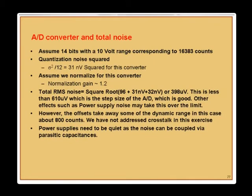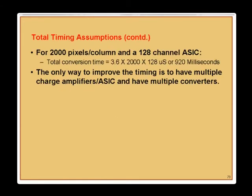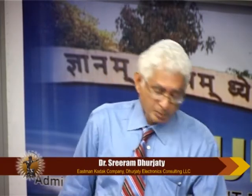This is the ideal case; in practice it differs. About 800 counts of the 14-bit converter are consumed by offsets, and crosstalk is not addressed here. Total pixel conversion time is 3.6 microseconds. For 2000 pixels per column with a 128-channel ASIC, readout takes 920 milliseconds with a single A-to-D converter. To improve timing you need multiple charge amplifiers per ASIC or multiple converters, which is done but adds cost.